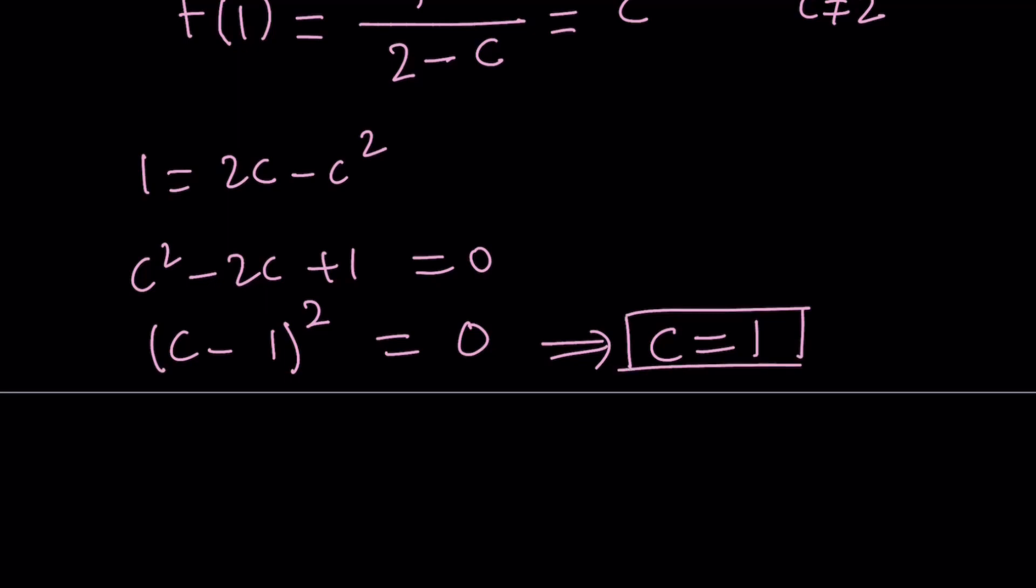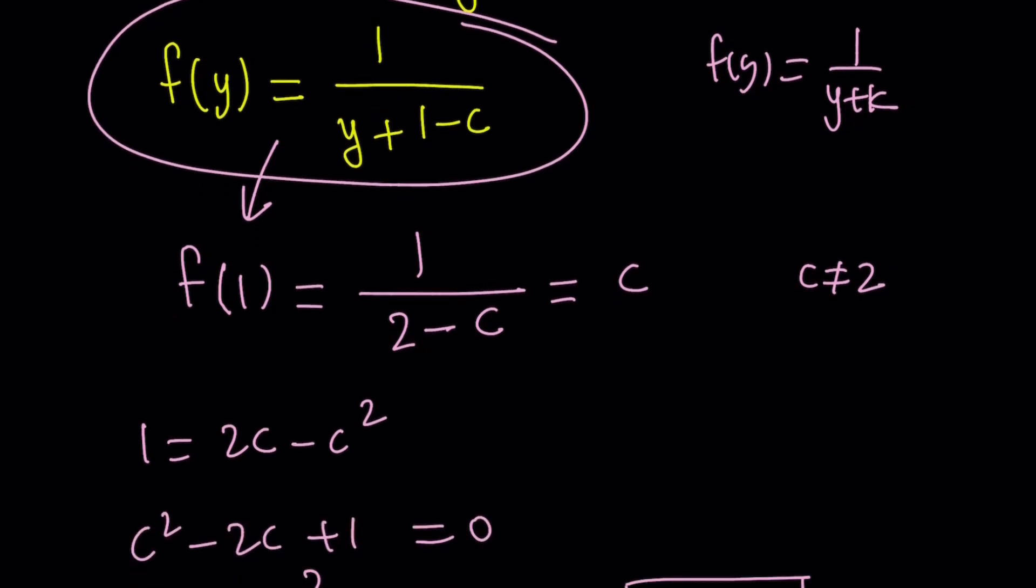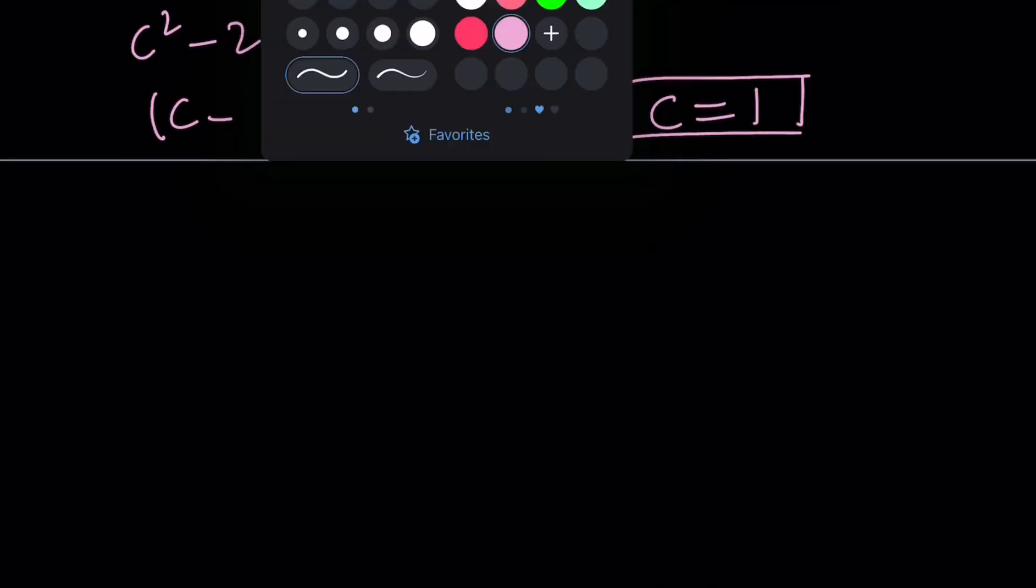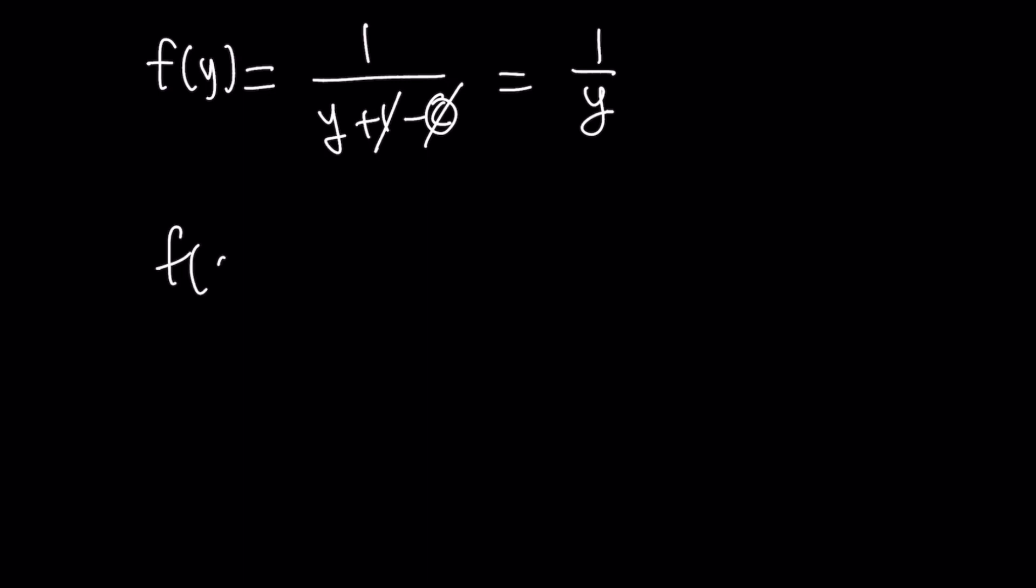Now, how does that help? Remember, we're looking for f of x, or an expression for f. But we also know that f of y can be written like this, right? And we do know that c is equal to 1 now. So let's go ahead and plug it in. So here's how it goes. We have f of y equals 1 over y plus 1 minus c. And replace c with 1, these two cancel out, and you end up with 1 over y. This means f of y equals 1 over y, which means we can write f of x as 1 over x. And that is actually the answer to the problem. We found the function f.